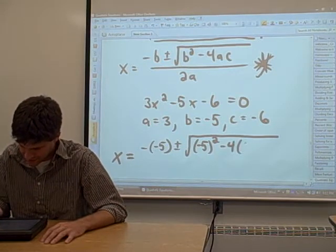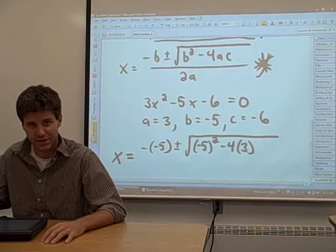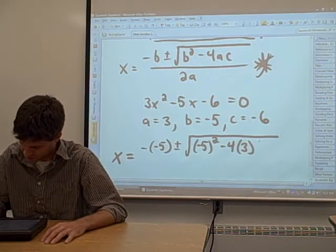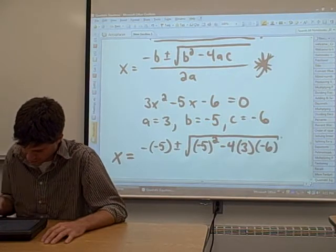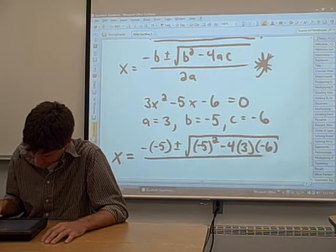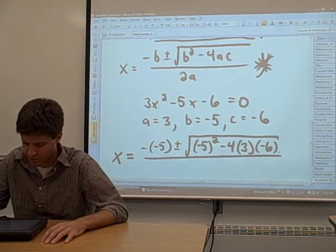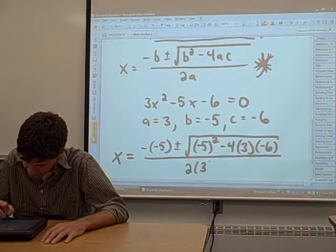I see an A, which is a 3 in our example. The C in this equation is a negative 6 in our example. We're going to divide that whole thing by 2 times A. 2 times 3.